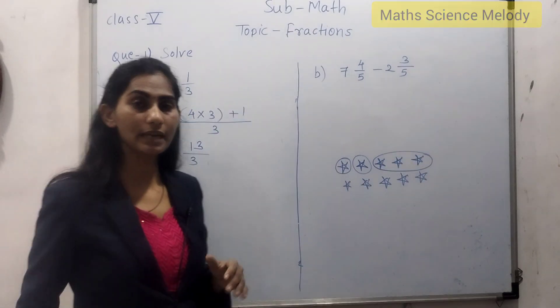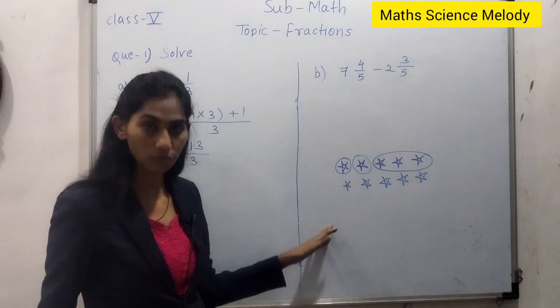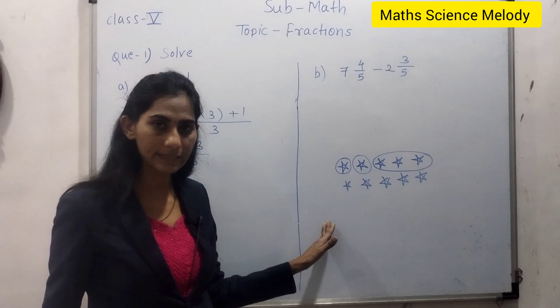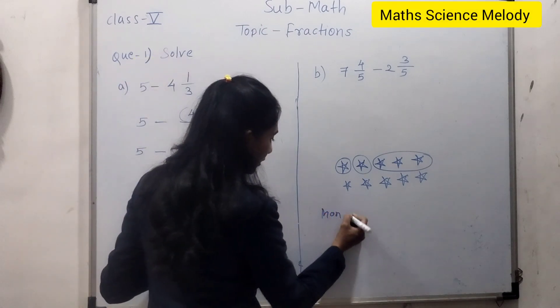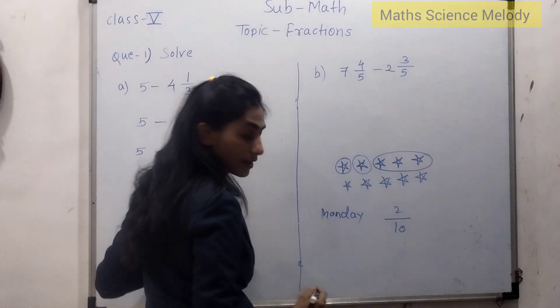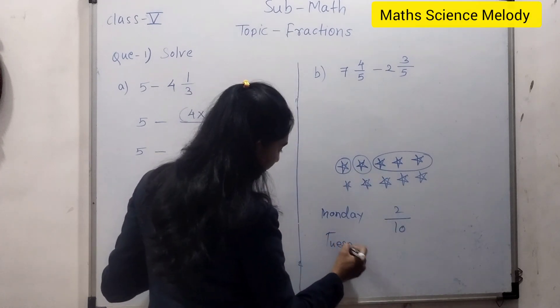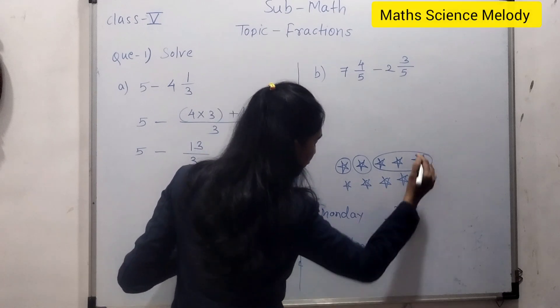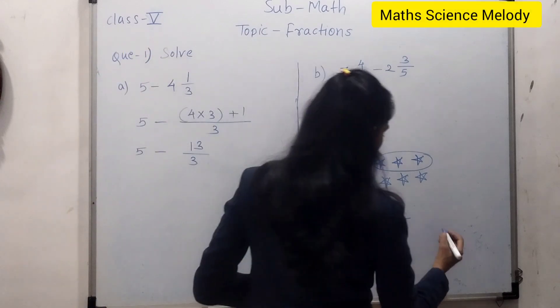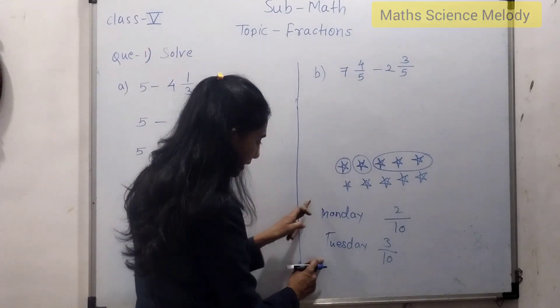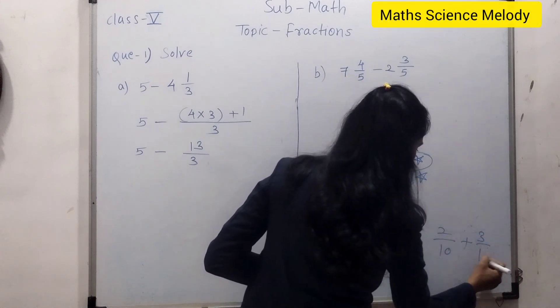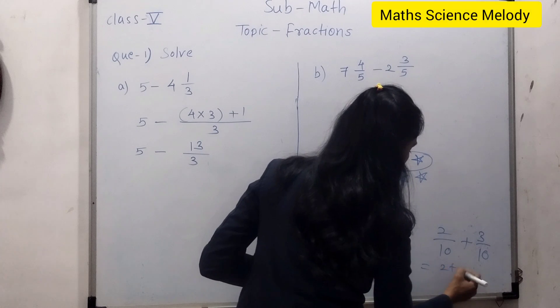Question is, how many stars total I have used in all? So in fraction we have to give the answer. On Monday, out of 10 stars I used 2 stars, and on Tuesday out of 10 stars I used 3 stars. So if we have to find how many total stars I used on both days, I will do 2 upon 10 plus 3 upon 10. So the answer will be 2 plus 3 upon 10.